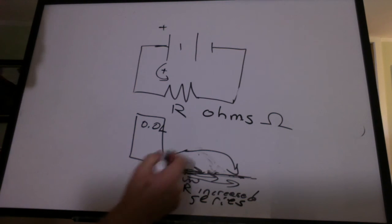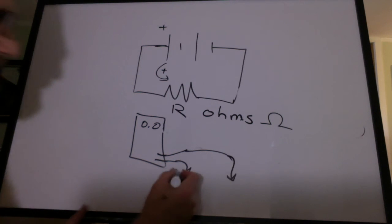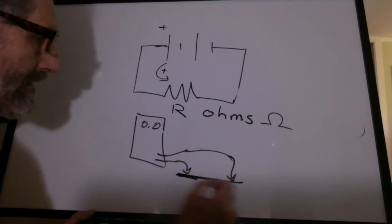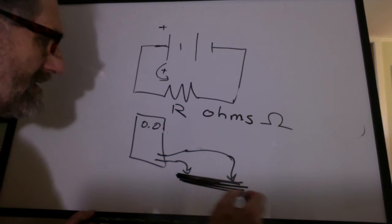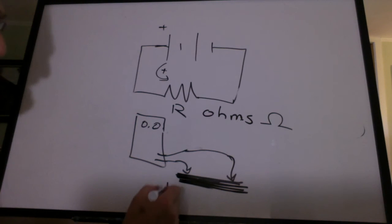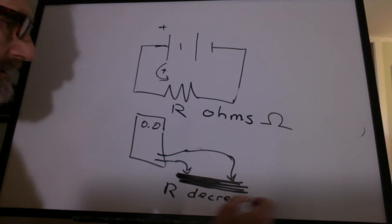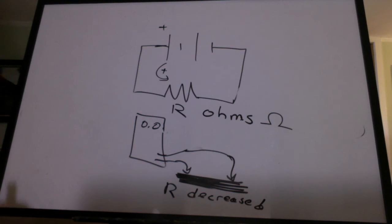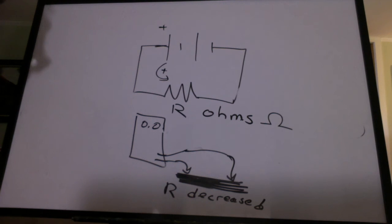So series just means one after the other. Then I colored in the line wider. And what's that mean? Well, the resistance actually decreased. It's a little like adding extra lanes to a highway to relieve a traffic jam. There's more places for the charges to flow, making it easier for them to flow.